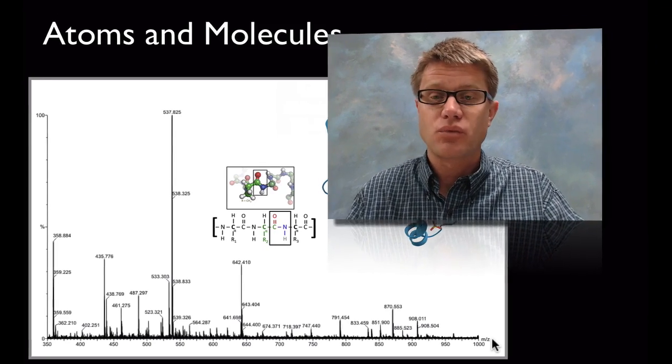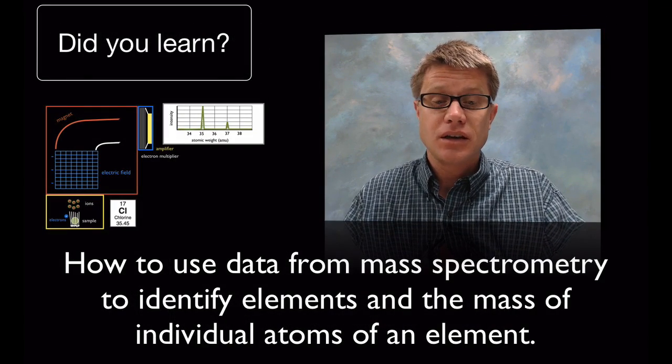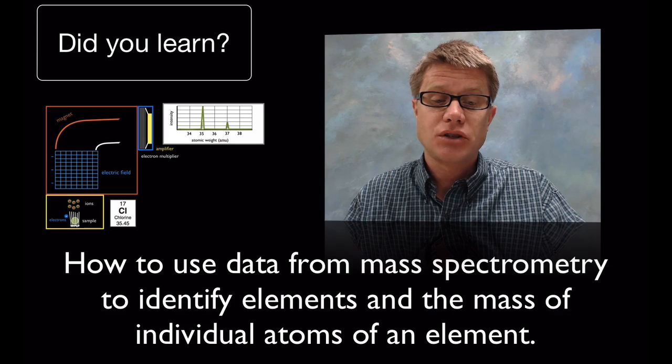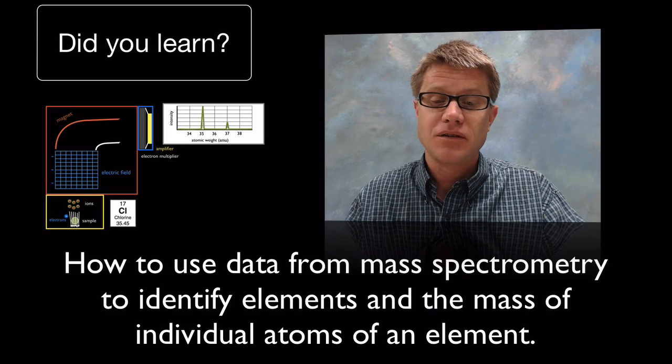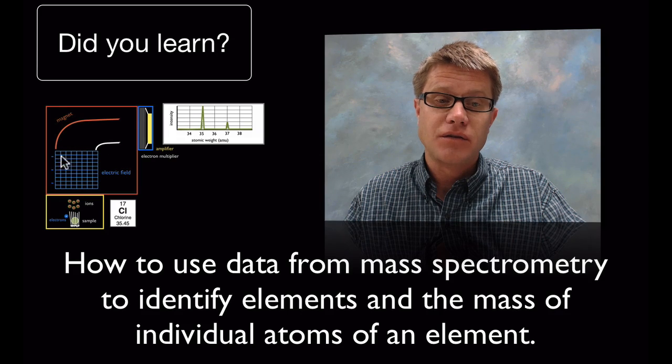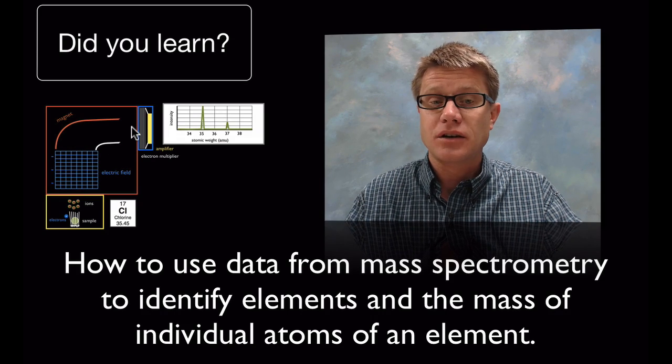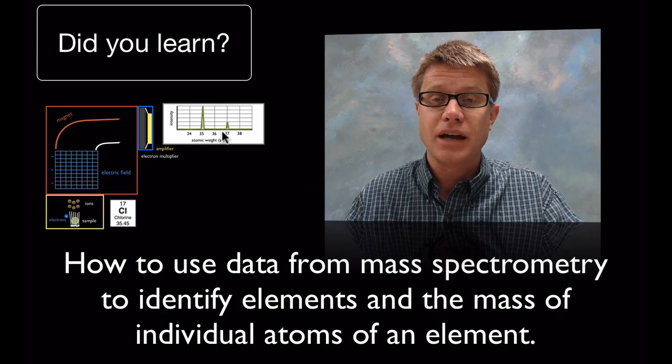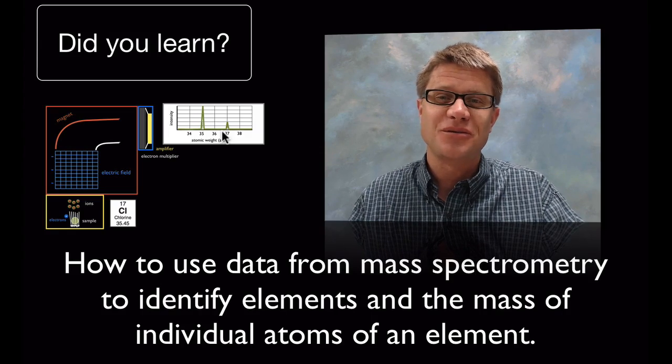Did you learn how to use data from mass spectrometry to identify elements and mass of individual atoms in an element? Remember it all ends up on that curve. If you can make the curve or not, it's going to be based on your mass. We can look at a spectrum from that to figure out their abundance. I hope that was helpful.